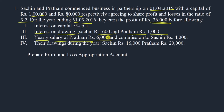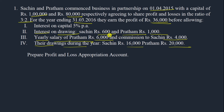Next is the yearly salary of Pratham: 6,000 rupees. Note this is a yearly salary, not monthly — they said 6,000 per year. Next is commission to Sachin: 4,000 rupees per year. Regarding drawings during the year of 16,000 and 20,000 — we should not consider those directly, because the interest on drawings amounts of 600 and 1,000 are already given.